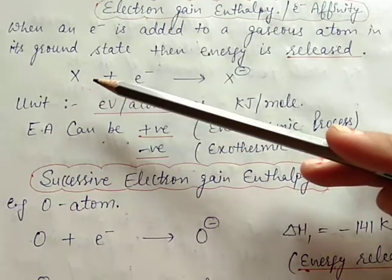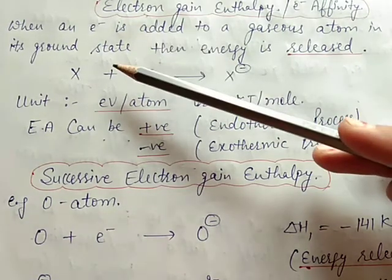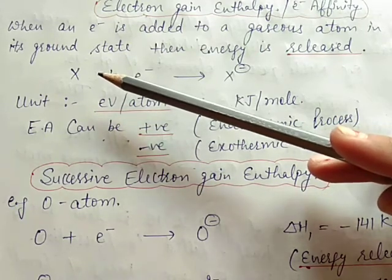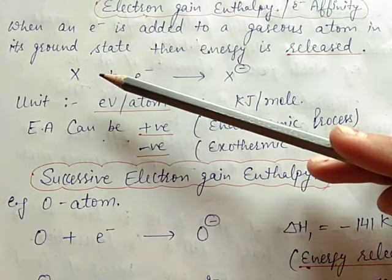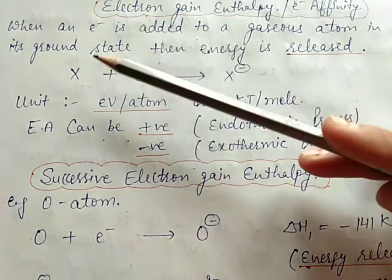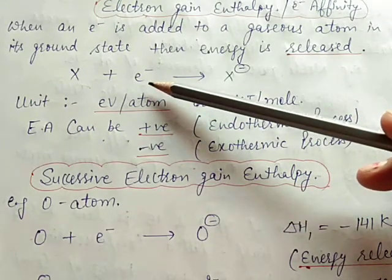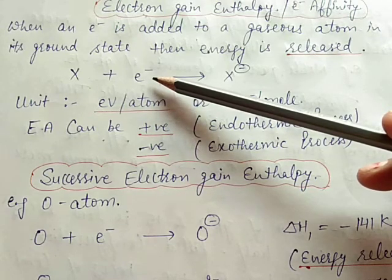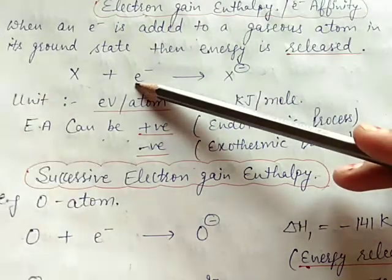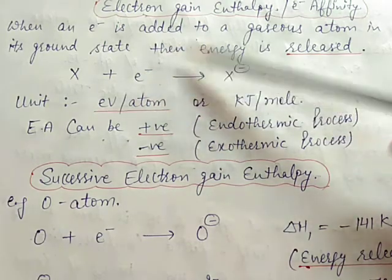The most stable state of an atom is the ground state. If the isolated gaseous atom is in an excited state, then lesser energy will be released on adding an electron. So, electron gain enthalpy of a gaseous atom is calculated in its ground state. Both ground state and isolated gaseous atom are included in this definition.